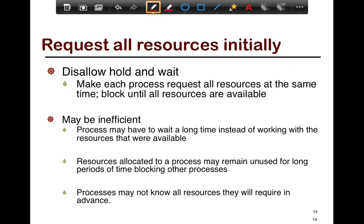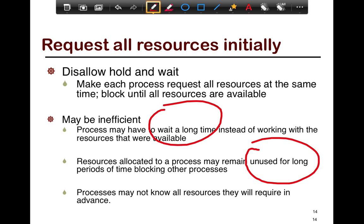The next technique is preventing hold-and-wait by requesting all resources initially. The way you disallow hold-and-wait is you make each process request all the resources at the same time. If you don't get even one resource that you need, you simply block until all resources are available. This may be inefficient because processes may have to wait a long time, and resources allocated to a process may remain unused for a long time.